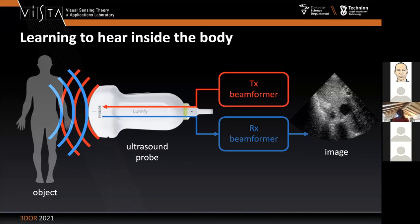In ultrasound, the image is acquired by sending an acoustic pulse which bounces back from discontinuities in acoustic impedance. We receive this echo and form the image. Typically the same device is used for transmitting and receiving, with no moving parts — just a phased array of ultrasonic transducers that, by delaying and summing multiple lines of signals, creates a focused beam that sweeps the scene. On the way back, the same way we form the transmit beam with a beam former, we form the image with a receive beam. It's straightforward signal processing.